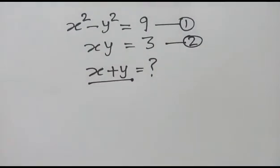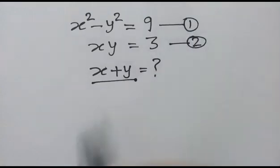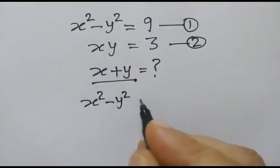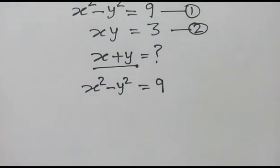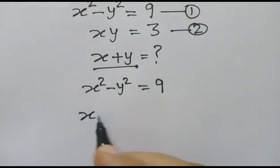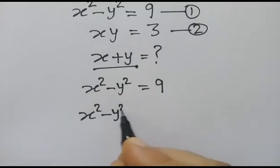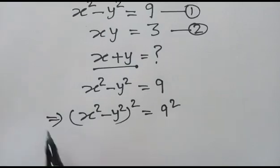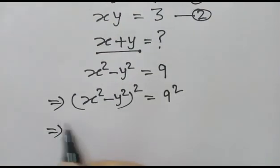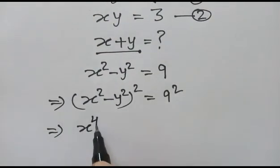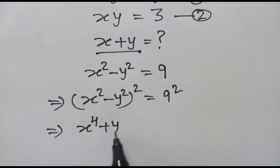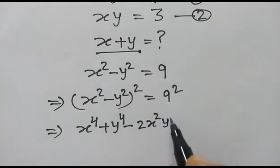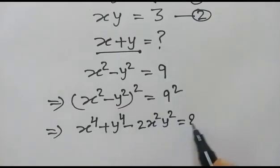First we will take equation one: x squared minus y squared is equal to 9. On squaring both sides, x squared minus y squared, whole squared, is equal to 9 squared. This gives us x to the power 4 plus y to the power 4 minus 2 x squared y squared is equal to 81.